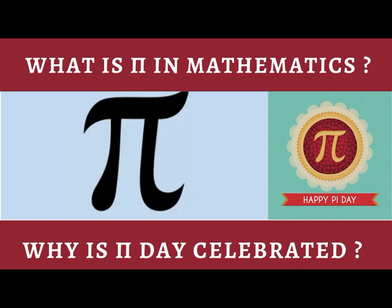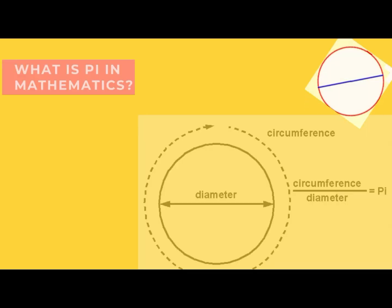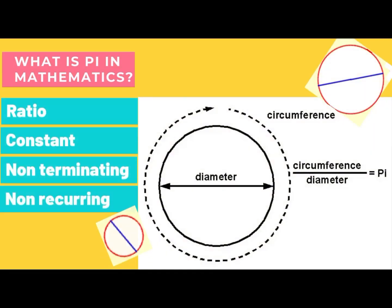First of all, let us all understand what is Pi. Pi in Mathematics is a constant expressing the ratio between circumference and the diameter of a circle.